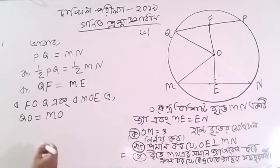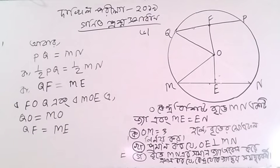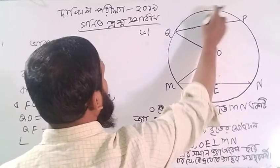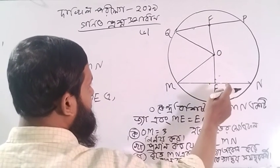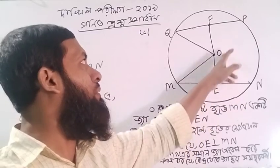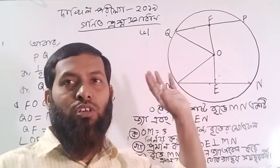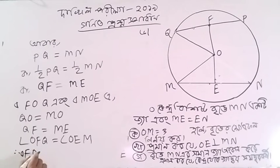We can do it. Q, F is equal to M, E. We can do it. Q, F is equal to M. We can do it. If E is M, then we can do it. If F is equal to M, P is equal to M. If we can do it, now we can do it. Let's do it. Tribus F, O, Q.